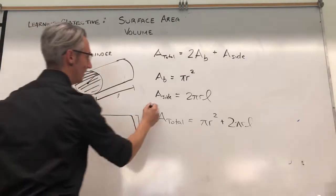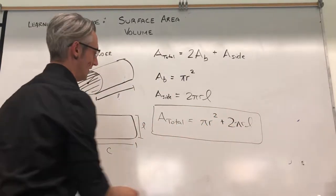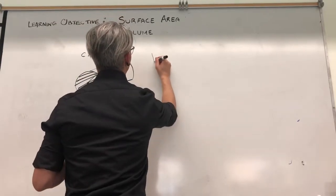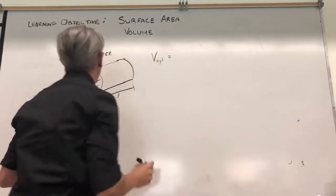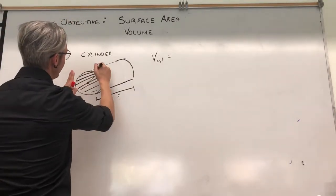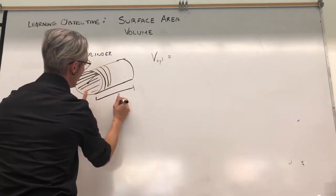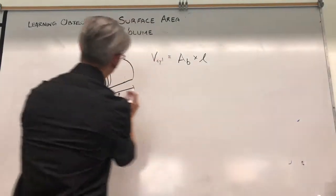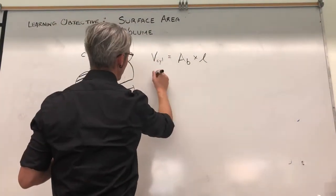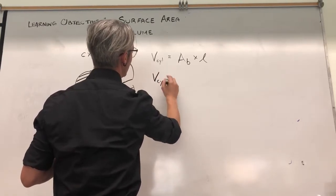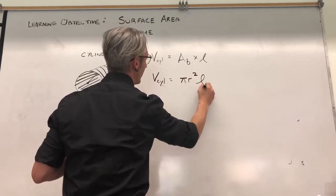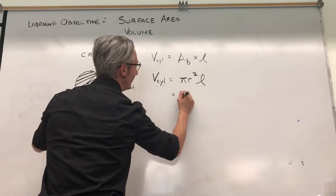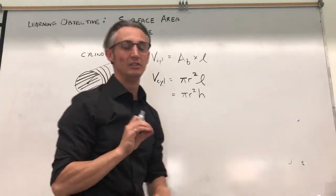This is on your formula sheet — that's how you get it. The other thing we can calculate for a cylinder is its volume. Think of volume as basically a whole bunch of slices of circles added together, and the number of slices you add is the length. So it's the area of the base times the length. We know the area of the base is πr², so the volume of a cylinder is πr²l — sometimes they call it height, sometimes length, you just need to know what that number is.